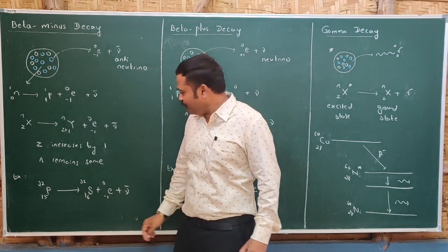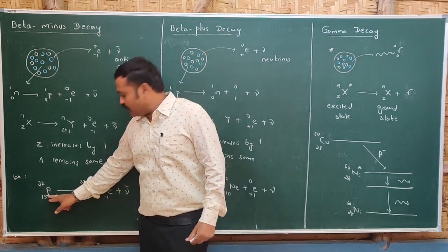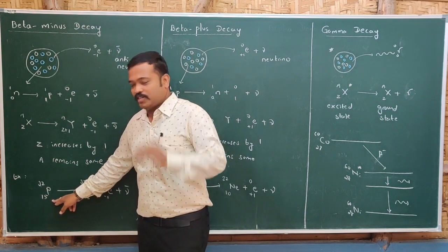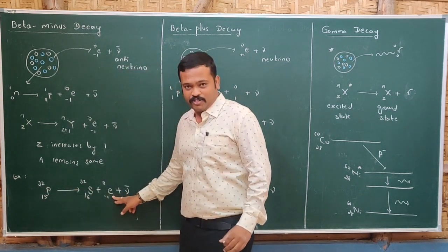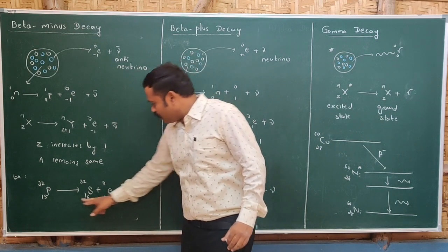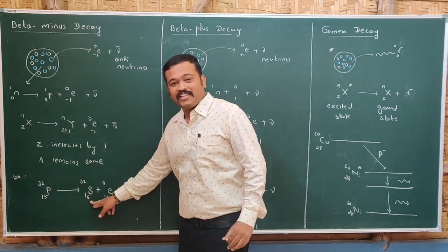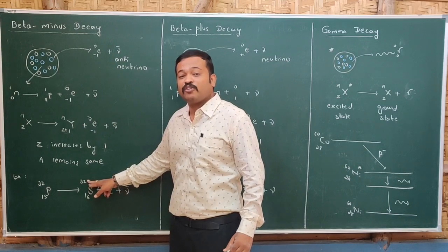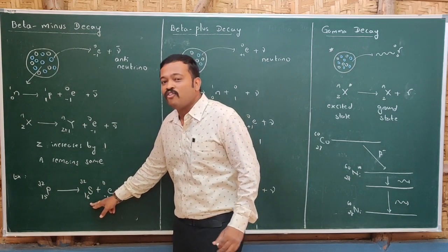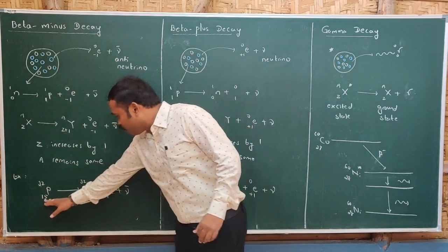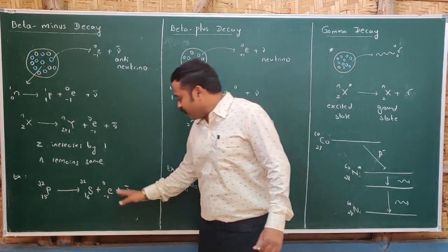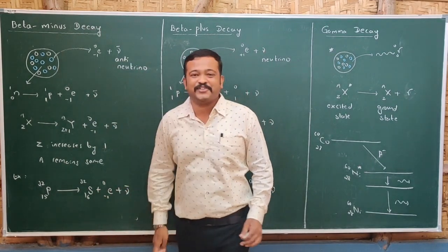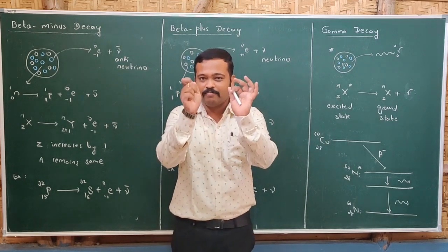Let us take an example: phosphorus-32 (atomic number 15). When it emits an electron, that is beta minus decay. The atomic number increases by one to 16, and the mass number remains 32. Atomic number 16 is sulfur. That is how phosphorus is converted to sulfur by the emission of an electron. This kind of decay is called beta minus decay.